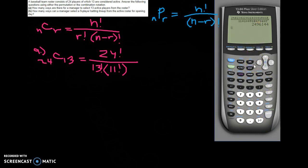And so picture what that's saying then is that there are just under 2.5 million different ways to pick 13 people from 24. Okay, so then the second part of this question, how many ways can the manager select a 9-player batting lineup?